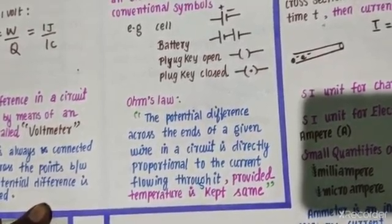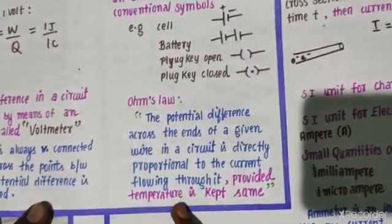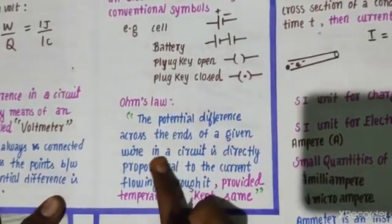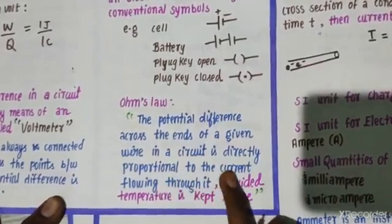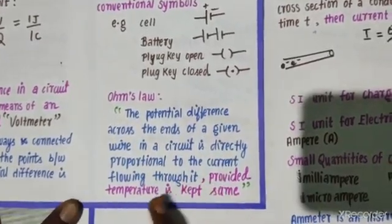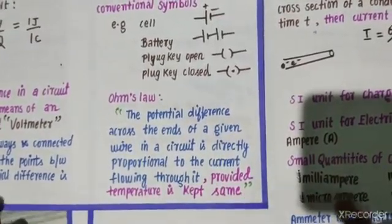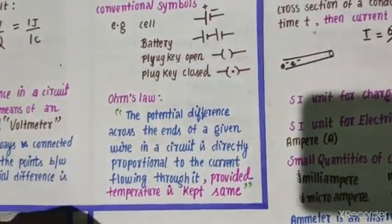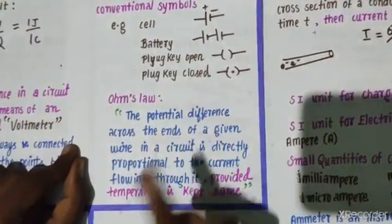So, the potential difference across the ends of the given wire in a circuit is directly proportional to the current flowing through it, provided the temperature is kept constant. The voltage is directly proportional to current. Potential difference is also known as voltage.